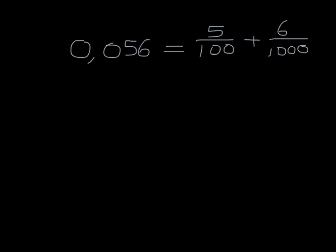Now we need to make that into a single fraction. How do we add two fractions? Well, we need to find a common denominator. The one denominator is 100, the other one is 1,000. So obviously the common denominator we're going to use is 1,000.